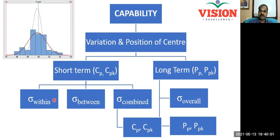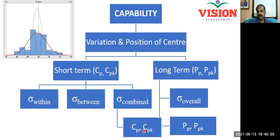How to calculate within and between-standard deviation will be explained in the next video. Once you have the within-standard deviation and between-standard deviation, you can combine the two to get combined-standard deviation. Use this combined-standard deviation in your capability indices formula and that will give you Cp and Cpk. To be frank, the formulas for Cp, Cpk and PP, PPK are one and the same. The difference is in the standard deviation — use overall standard deviation and you get PP, PPK; use sigma combined and you get Cp and Cpk.